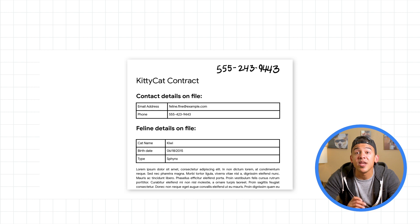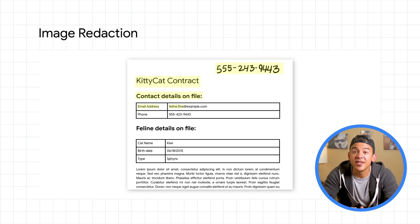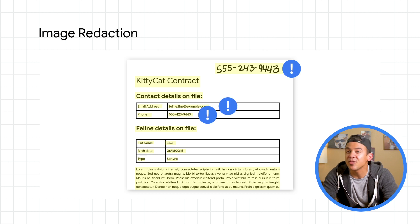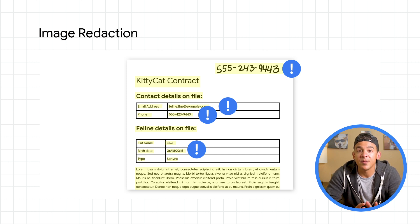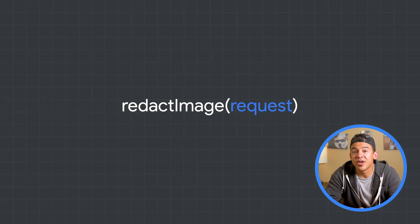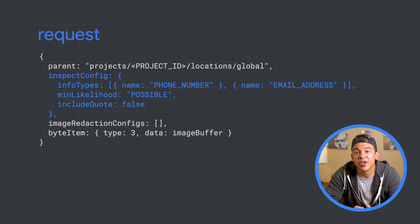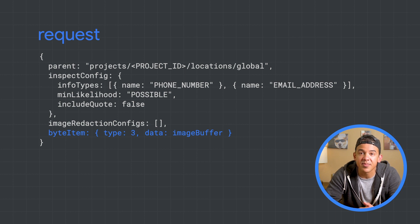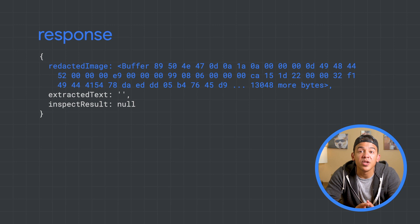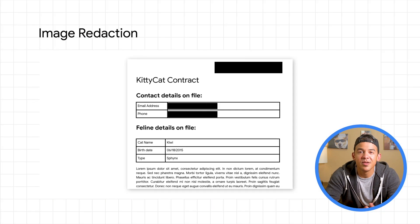The same concept can be applied to images using image redaction. In this case, DLP uses optical character recognition to find potential text in an image and overlays an opaque bar over any suspected sensitive values. Let's take a look at another Node.js request, this time for this image. The request object is a bit different. We once again provide an inspection configuration where we can indicate likelihood and infotypes. We have the option of passing redaction configuration options, but by default it'll just place a black bar only on the text that it matches. And finally, we provide the image converted to a string along with the file type. The response here will be a new image with bars covering the redacted data. Our image has successfully been de-identified thanks to image redaction.